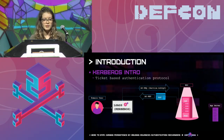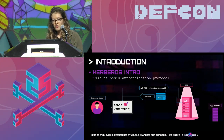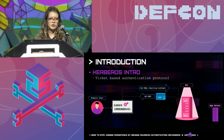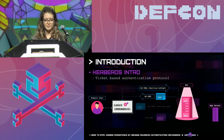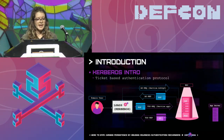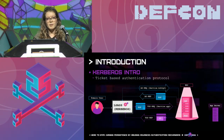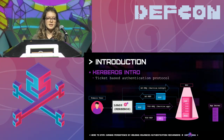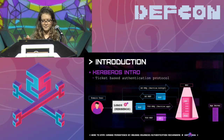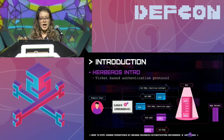Kerberos is a ticket-based authentication protocol. Say a domain user wants to access an application server. First, the Kerberos client issues an AS request to the domain controller, requesting a ticket to the KRBTGT service. In response, you receive a ticket-granting ticket (TGT), which is used in the second stage. The client then sends a TGS request to the ticket-granting service, requesting a ticket for that specific service, attaching the TGT along with additional authentication data. If successful, the client gets a service ticket. The third stage is using that ticket to access the application service.